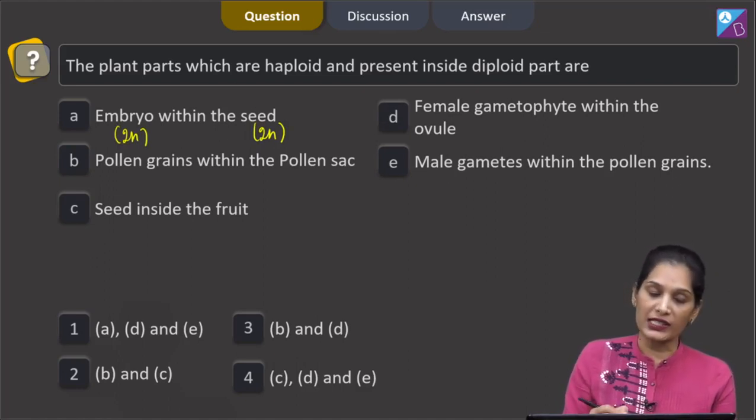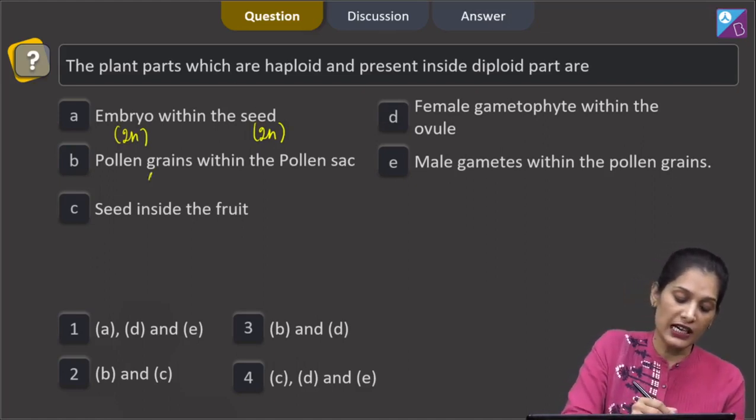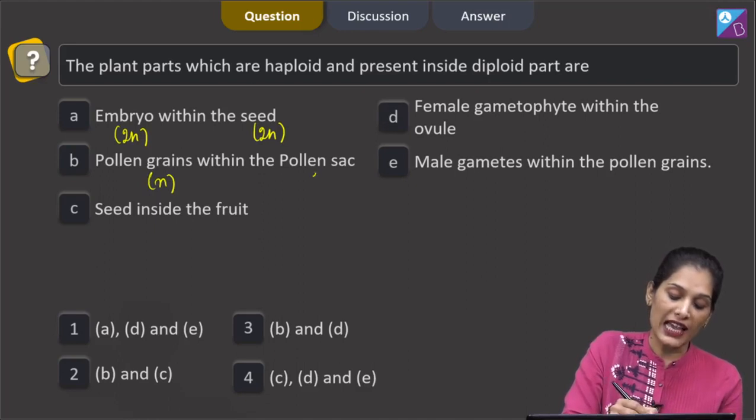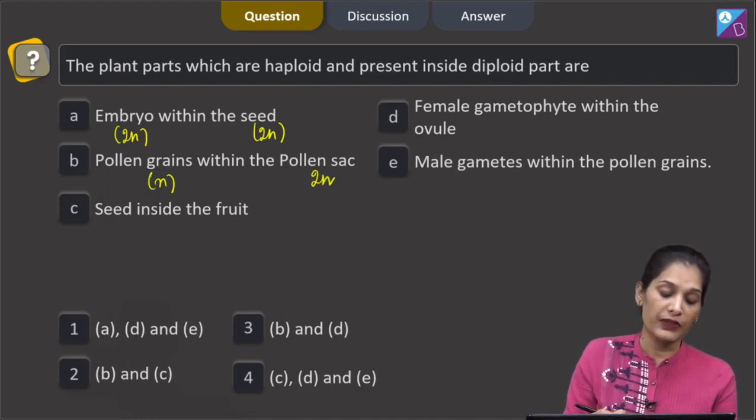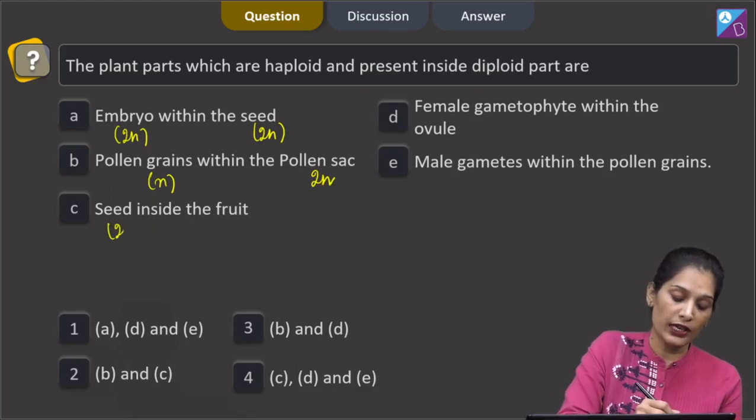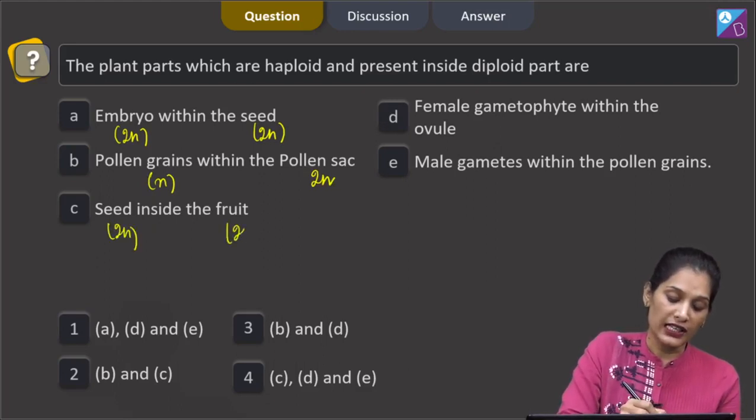B, pollen grains within the pollen sac. Pollen grains are haploid, pollen sac is diploid. C, seed inside the fruit. Seed is diploid, fruit is again diploid.